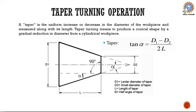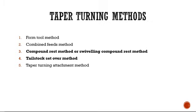Taper turning is the operation of producing a conical surface. A taper is a uniform increase or decrease in the diameter of the workpiece measured along its length. If the taper angle is alpha, then tan(alpha) = (maximum diameter minus minimum diameter) divided by (2 times the length). We first calculate the required taper angle, then apply it over the mechanism so that taper cutting is performed on the machine. There are various methods for taper turning.